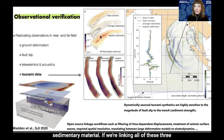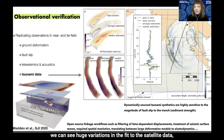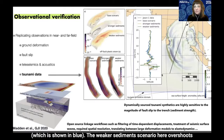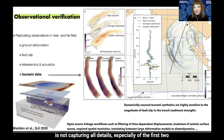Linking all three dynamic rupture scenarios to tsunami models and comparing to satellite data, we see a huge variation in fit. The weaker sediment scenario overshoots observations dramatically, while the stronger sediment scenario does not capture all details — especially the first two double peaks in certain recordings — but provides the best overall match.